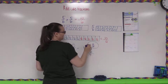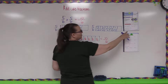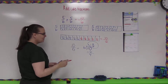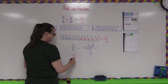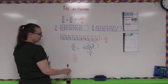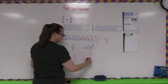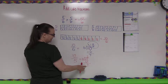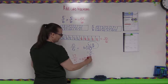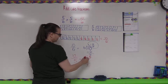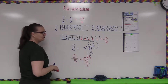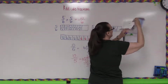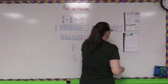Let's practice one more conversion. Say you have twelve-fifths — this is like saying twelve divided by five. How many fives fit into twelve? Two times — five times two is ten. The remainder is two, over the divisor five. So twelve-fifths as a mixed number is two and two-fifths.